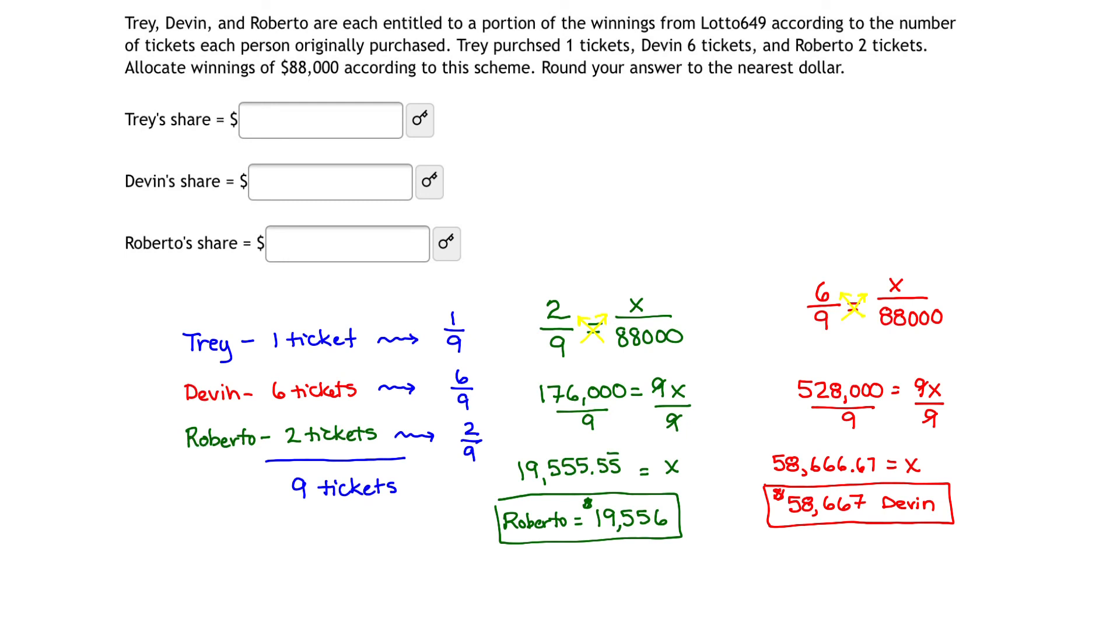If we summarize and put all those numbers up into our boxes, we had that Trey's share was $9,778, Devin's share was $58,667, and finally Roberto's share which was $19,556.